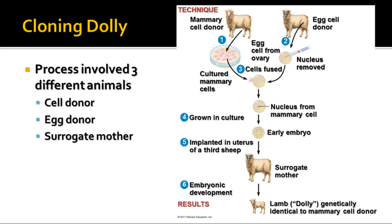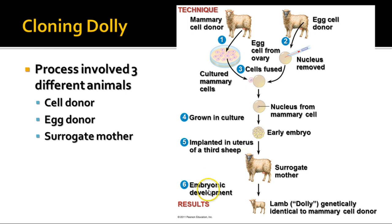Here's the process — three different animals were involved: the mammary cell donor, the egg cell donor, and the surrogate mother. They cultured the mammary gland cells, removed the nucleus from an egg cell, and fused the cells together using an electric spark. They grew it in culture to produce an embryo, then implanted the embryo in the uterus of the surrogate mother, and the embryo developed into a lamb. Dolly was named after Dolly Parton because they took cells from a mammary gland. DNA analysis confirmed that Dolly's DNA was identical to the DNA of the mammary cell donor — that's how you know it's cloned.